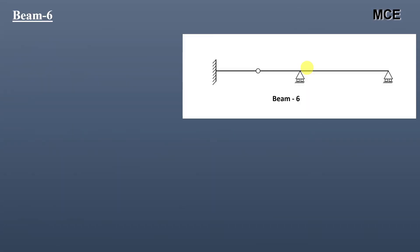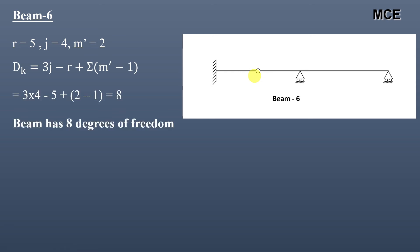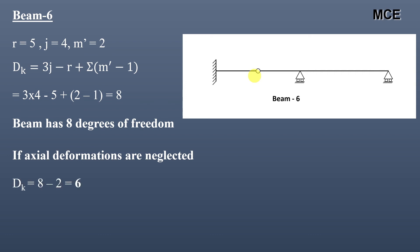For beam six, there are five reactions, four joints, and one internal hinge, so m′ = 2. The value of dk = 8, meaning the beam has eight degrees of freedom. This beam has two members, so if axial deformations are neglected, dk = 8 − 2 = 6.